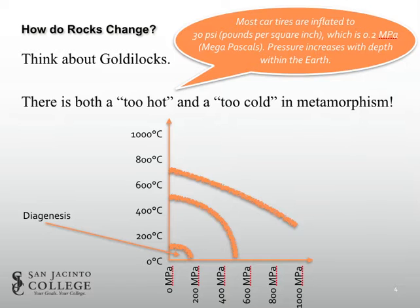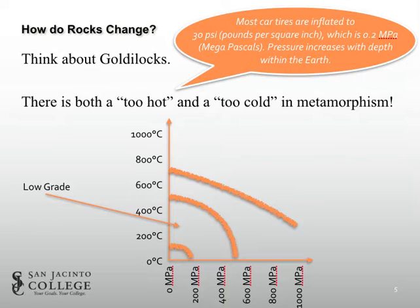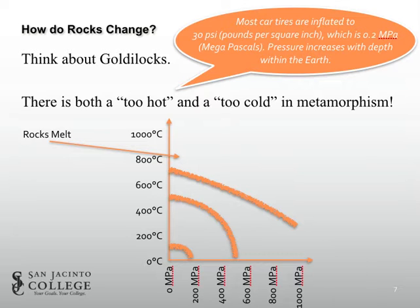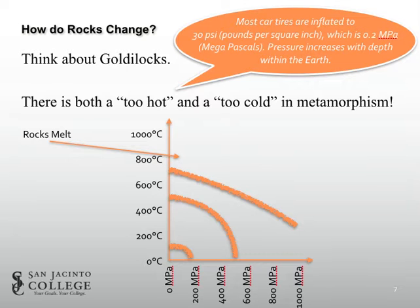Low temperature, low pressure changes that occur in sediments as they're converting to sedimentary rocks relate to diagenesis, which we previously defined in our sedimentary rocks lecture. Low-grade metamorphism occurs within a range of low temperatures and low pressures. At higher temperatures and pressures, we have high-grade metamorphism. If it gets too hot, we're just going to melt those rocks, and then we're talking about igneous rocks. When we talk about metamorphic rocks, we're talking about a range where these rocks behave ductally instead of breaking or melting.